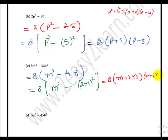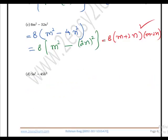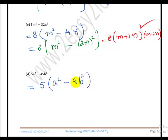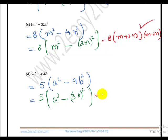Part d: apply the taking common method. Take 5 as common, leaving a squared minus 9b squared. Both terms are square terms — a squared and 9 is the square of 3, and b is a square term. Applying difference of squares, the final answer is 5(a plus 3b)(a minus 3b).